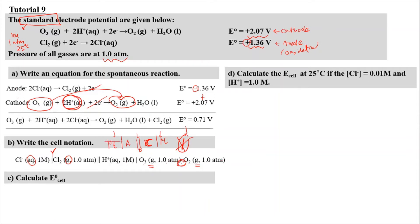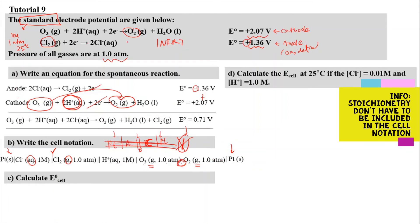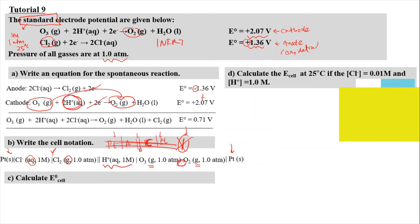Because the reaction involves gaseous species — oxygen and chlorine — we use an inert electrode, which is platinum. We include the platinum electrode at the beginning of the anode side and at the end of the cathode side. This is the full cell notation for the reaction. Ensure that you write the phase, the concentration or partial pressure, and be careful with the phase boundary. The electrolyte also needs to be placed inside the cell notation because it is part of the reaction.